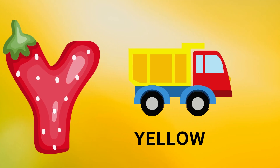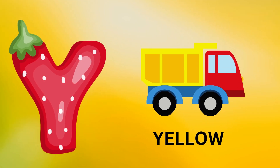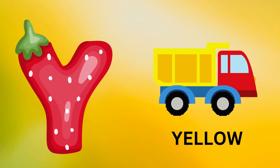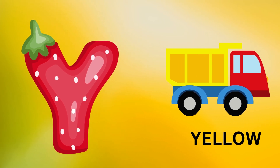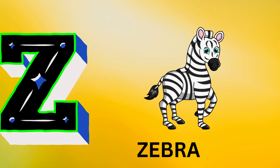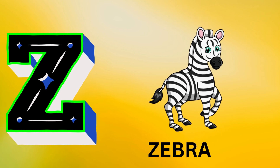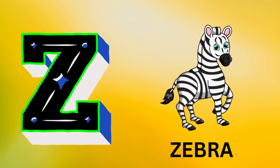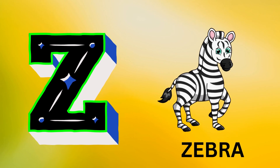Y is for yellow, ye-ye-yellow. Z is for zebra, z-z-zebra.